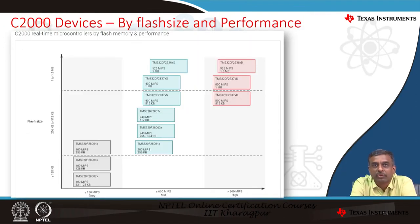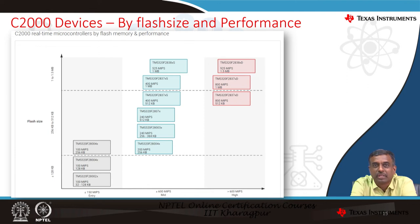Categorizing devices by flash size and performance: low-MIPS devices have flash up to 256 KB; devices in the 150–600 MIPS range have flash up to about 1 MB; and devices beyond 600 MIPS have flash capability of 1 MB to 1.5 MB. Across all devices, there are options with low or high memory footprint and varying peripheral capabilities, ensuring a wide range of portfolio choices for applications from solar to EV and beyond. All devices are software compatible, enabling seamless migration.